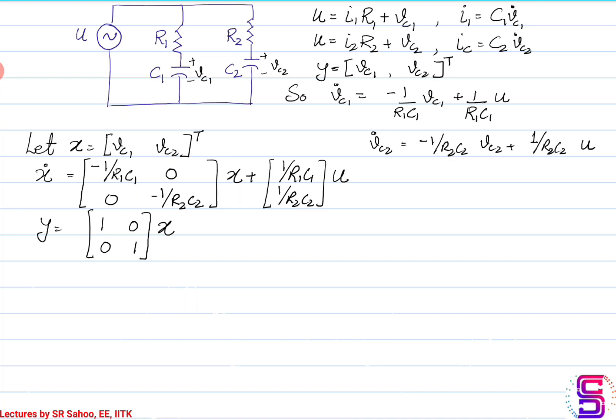Having formed the state vector from these chosen states, I have the state space representation. The output I am interested in is the voltage across both capacitors, Vc1 and Vc2.